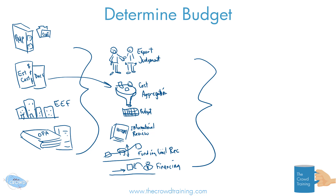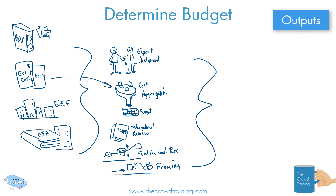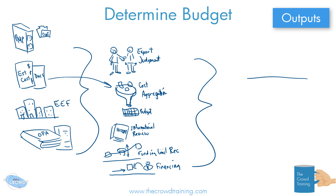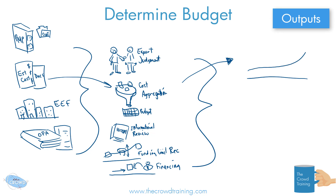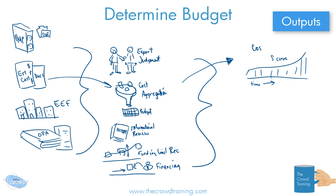Now let's look at the outputs. The budget here in the PMP and PMBOK is laid out in a certain manner over time to show how costs are expected to be spent, and it typically follows an S-curve kind of look. Really what this is, is our cost baseline, which we use to help us monitor and compare our progress throughout the project — to see if we are on track or if there are variances, and to gauge how our project is performing in terms of costs.